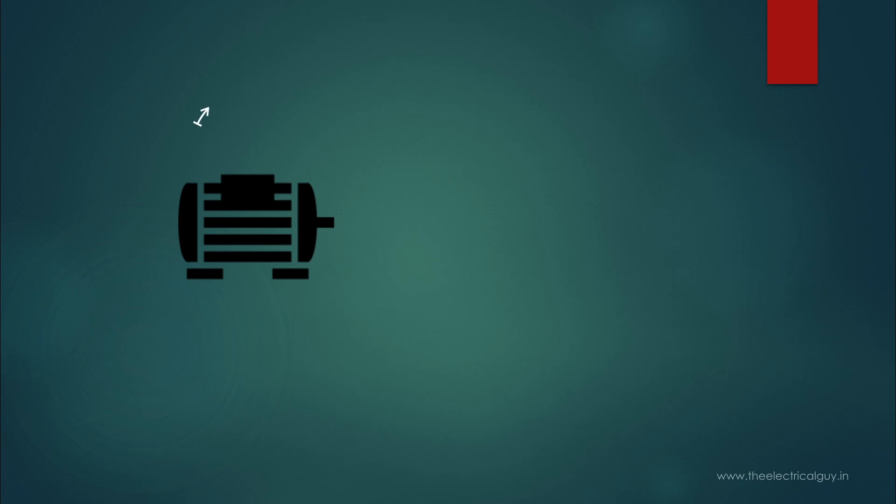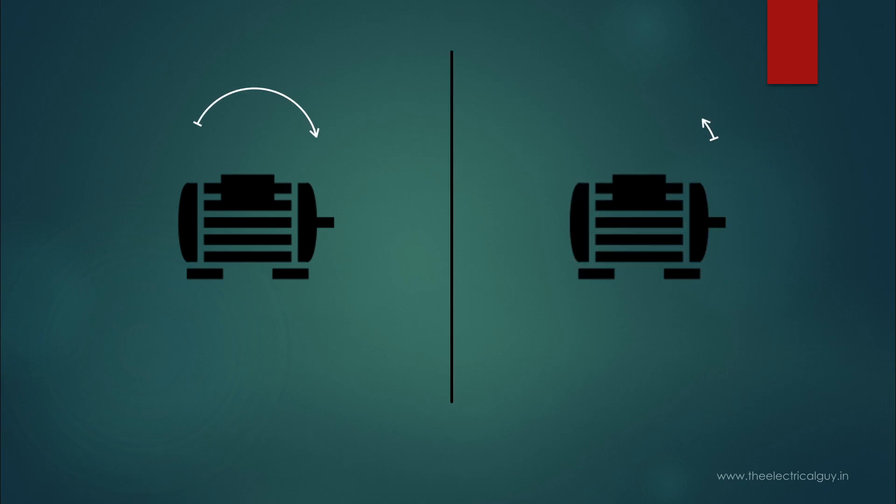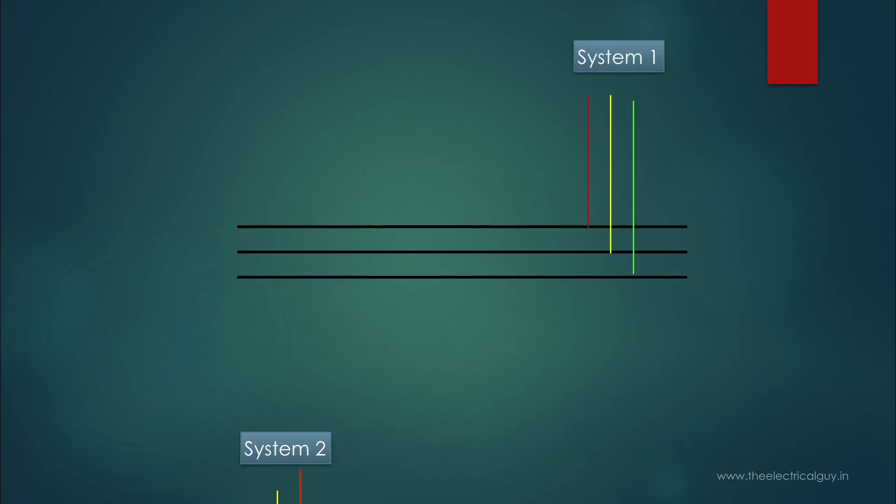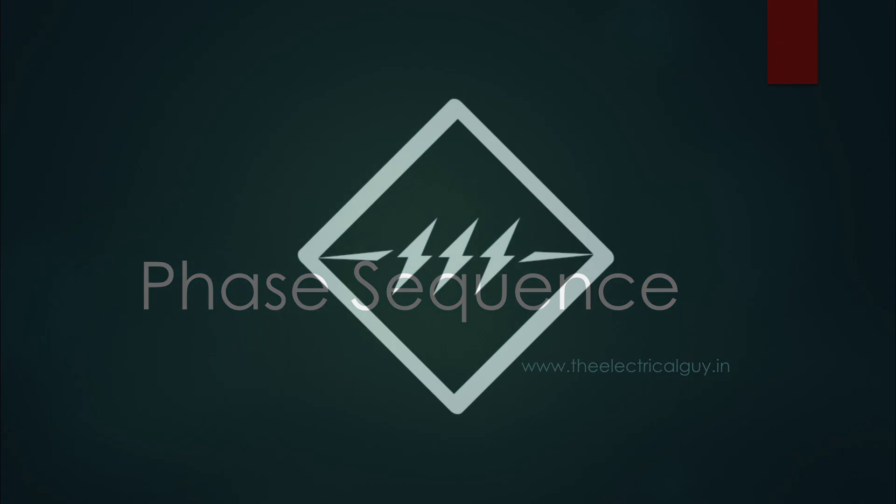Phase sequence in a three-phase system determines the direction of rotation of three-phase induction motors. Phase sequence also decides whether we can connect one three-phase system parallel with another or not. And hence, it is very important to understand what is phase sequence.